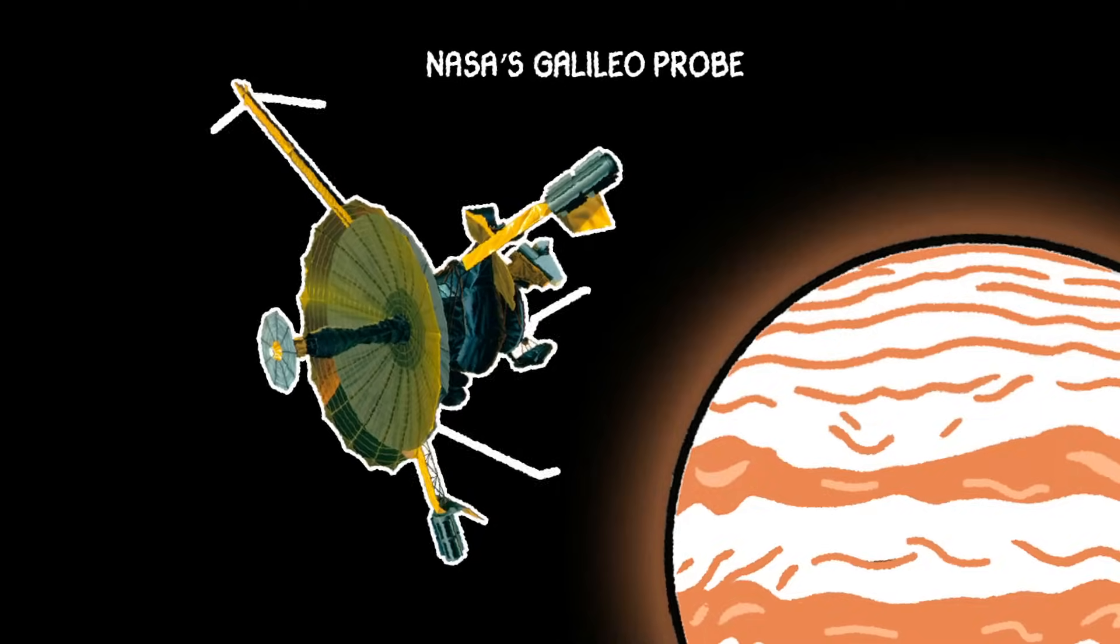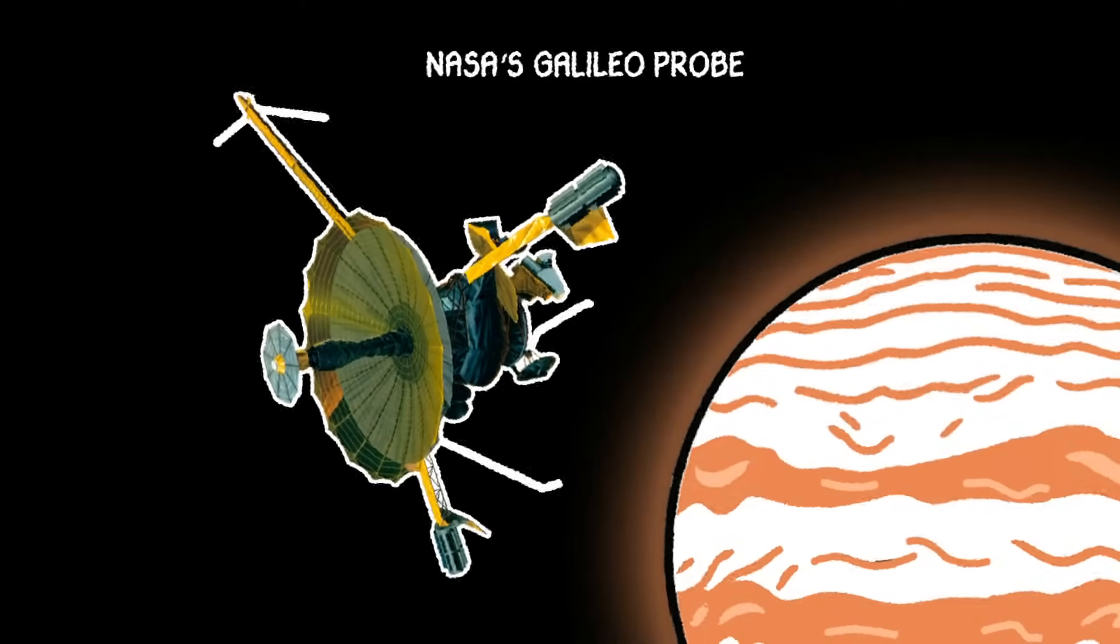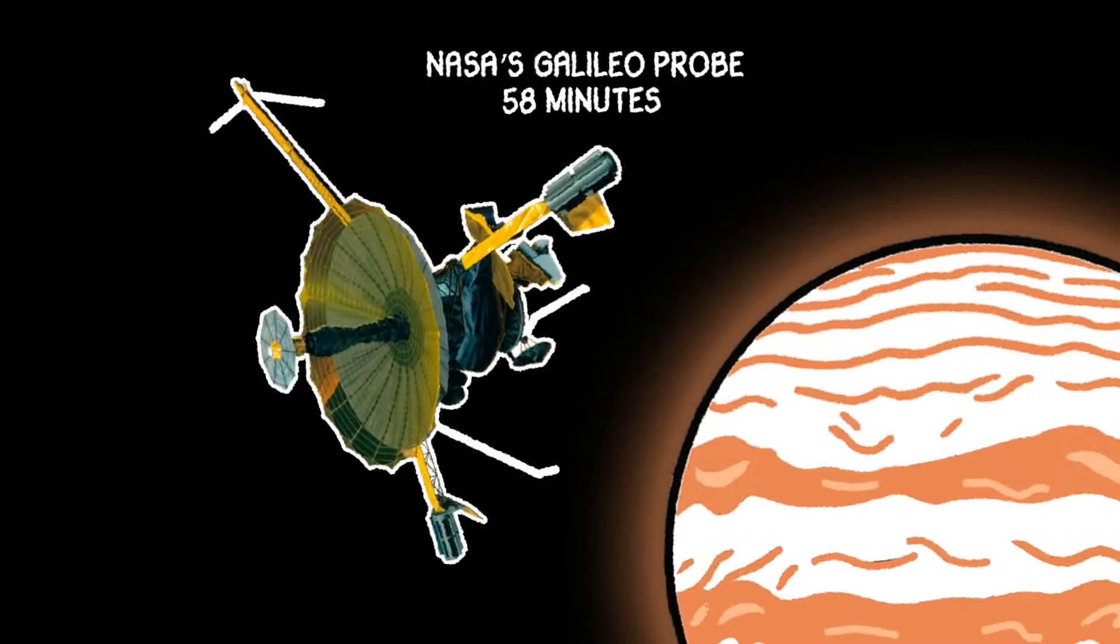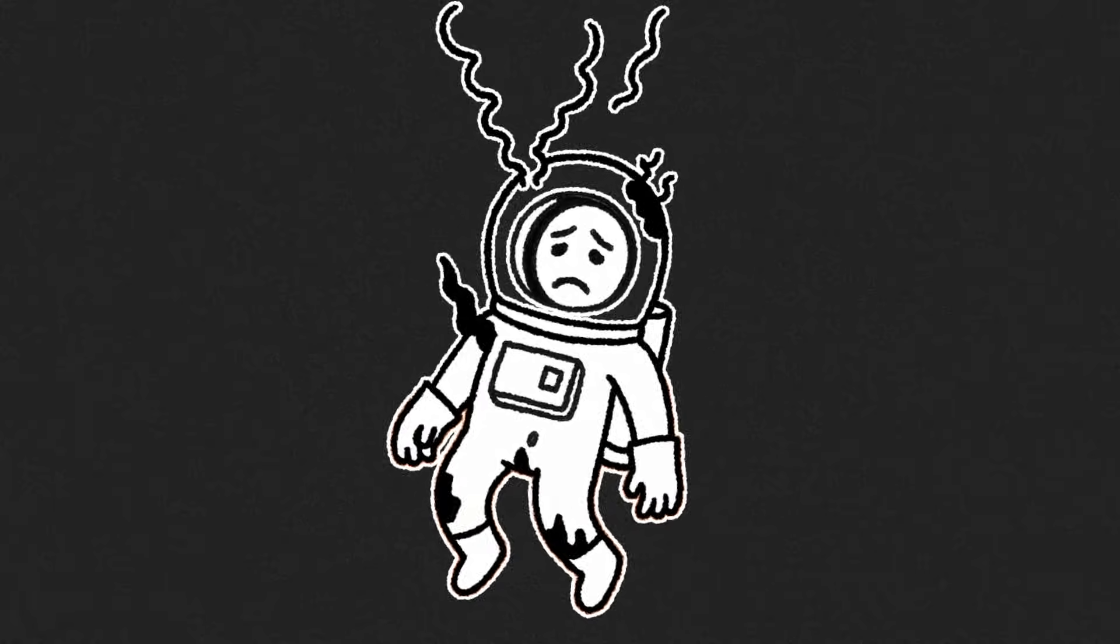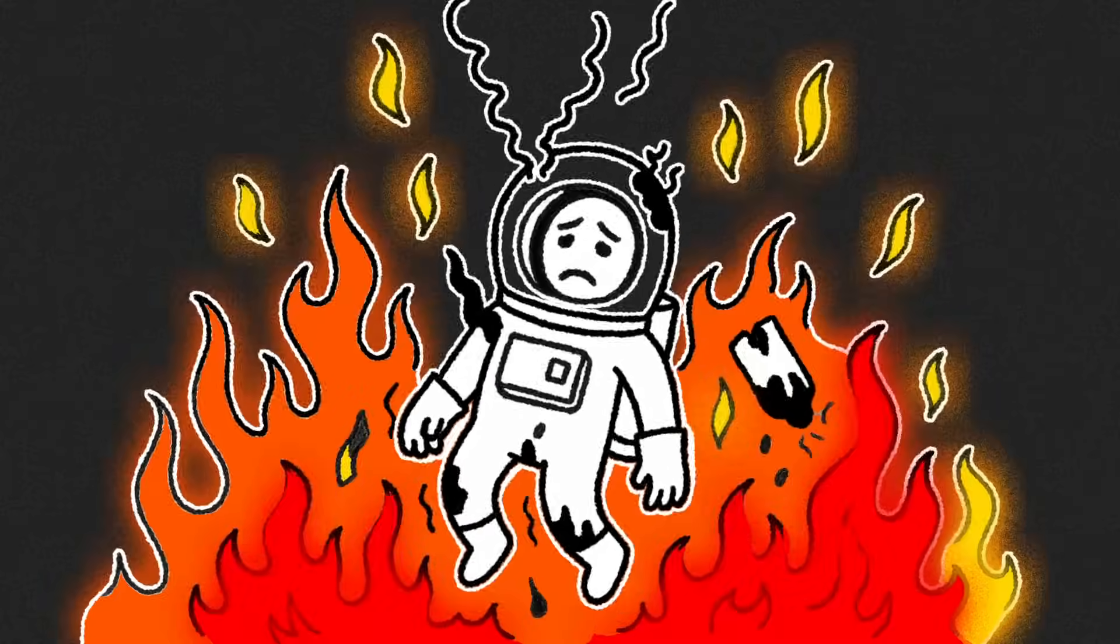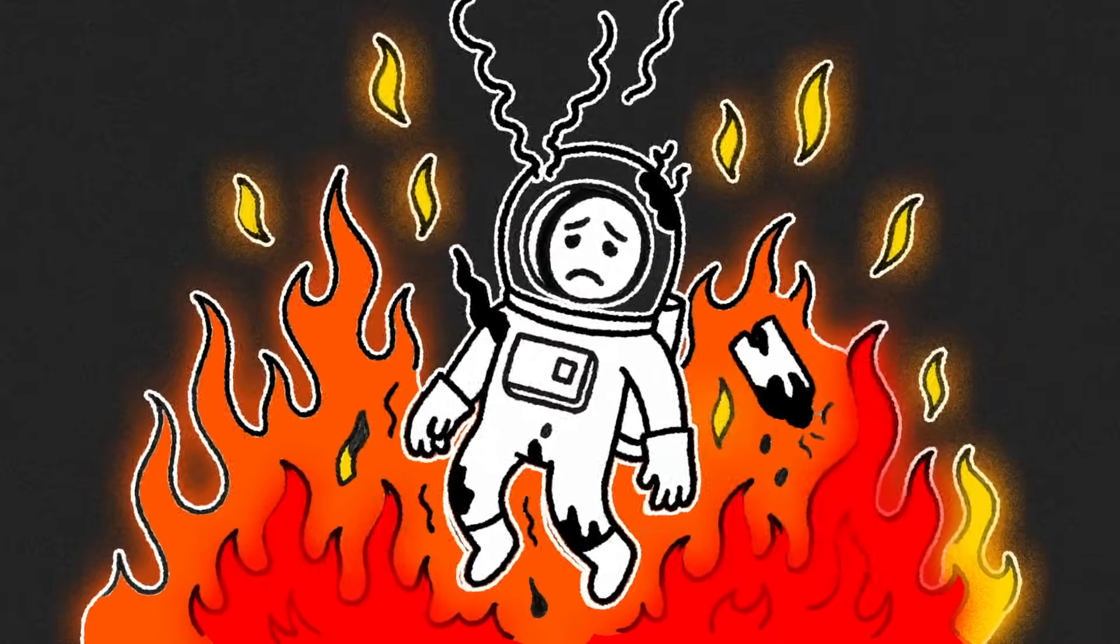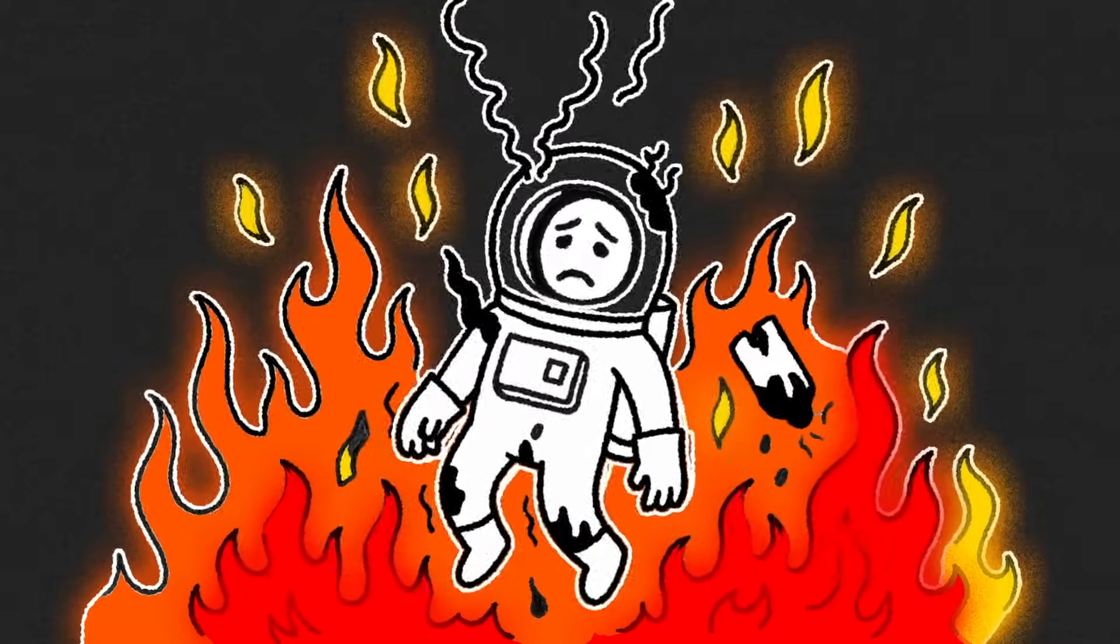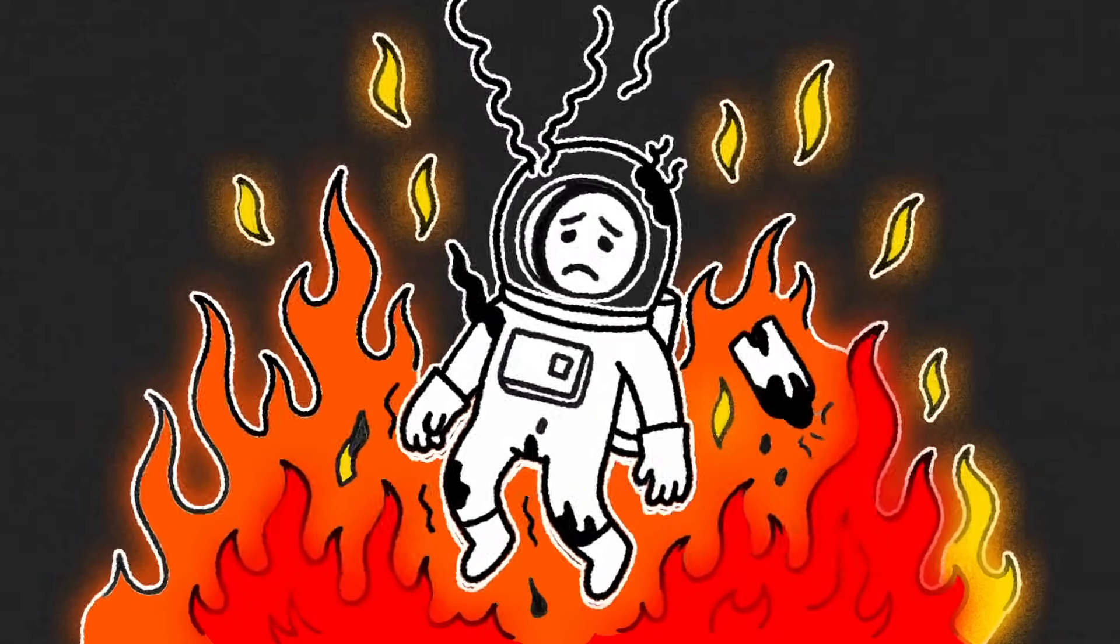For comparison, NASA's Galileo probe had a specifically designed heat shield just to deal with this. It lasted 58 minutes before it got torn apart by the pressure and heat. Jeff? He's wearing an off-the-shelf suit and a prayer. His gear chars, melts, and eventually just peels away, atom by atom. What's left is a carbon smear roasting like a marshmallow in a hydrogen firestorm. And still, he falls.